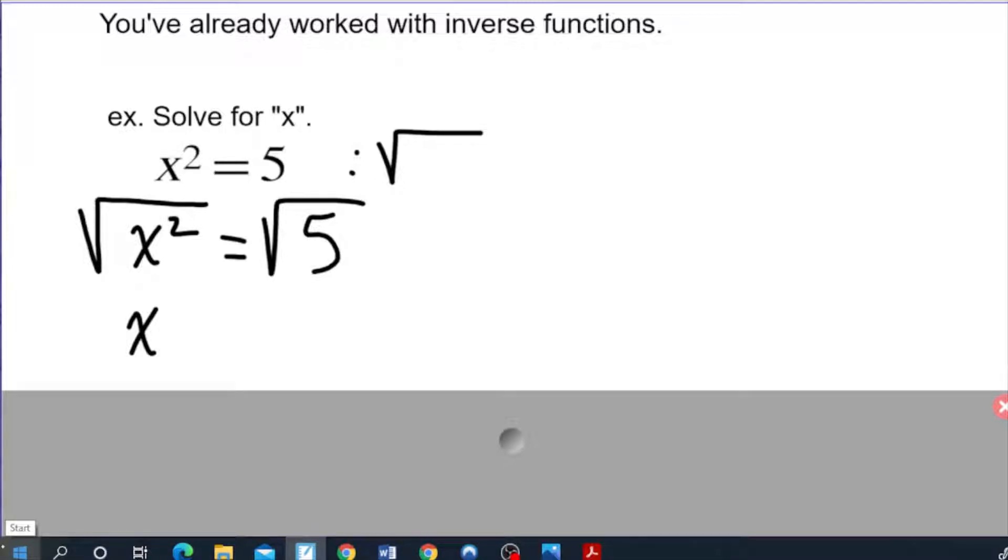You'll notice that the root and the x squared are gone now because they've completely annihilated each other. On this side we would just use a calculator now to actually find the answer and that in a nutshell is basically what an inverse function is. It's a function that completely annihilates another function and pulls out the variable that's stuck inside. That variable is often called the argument.